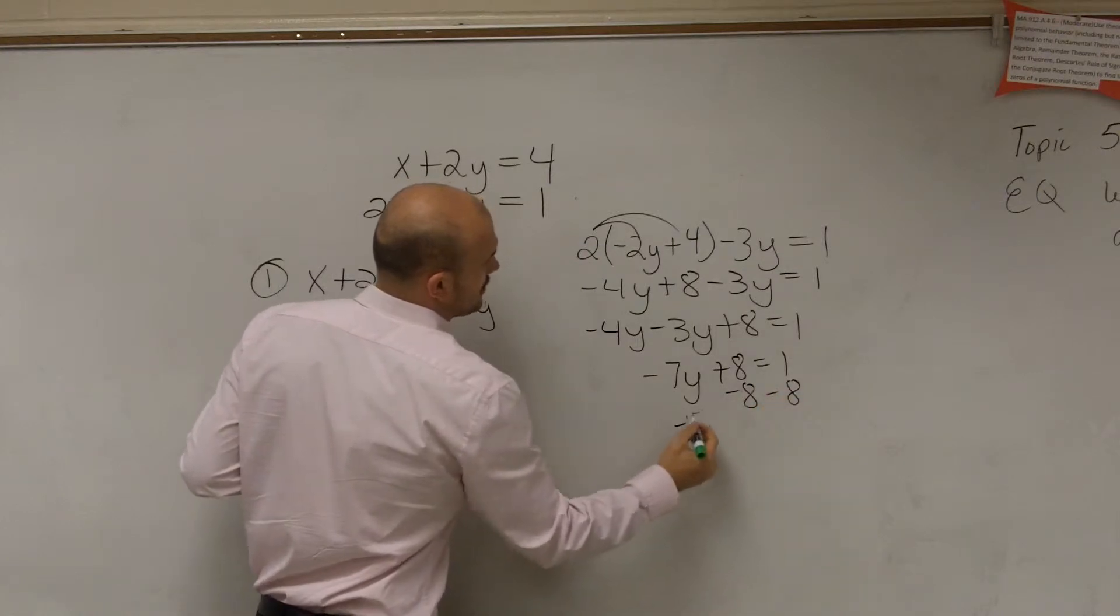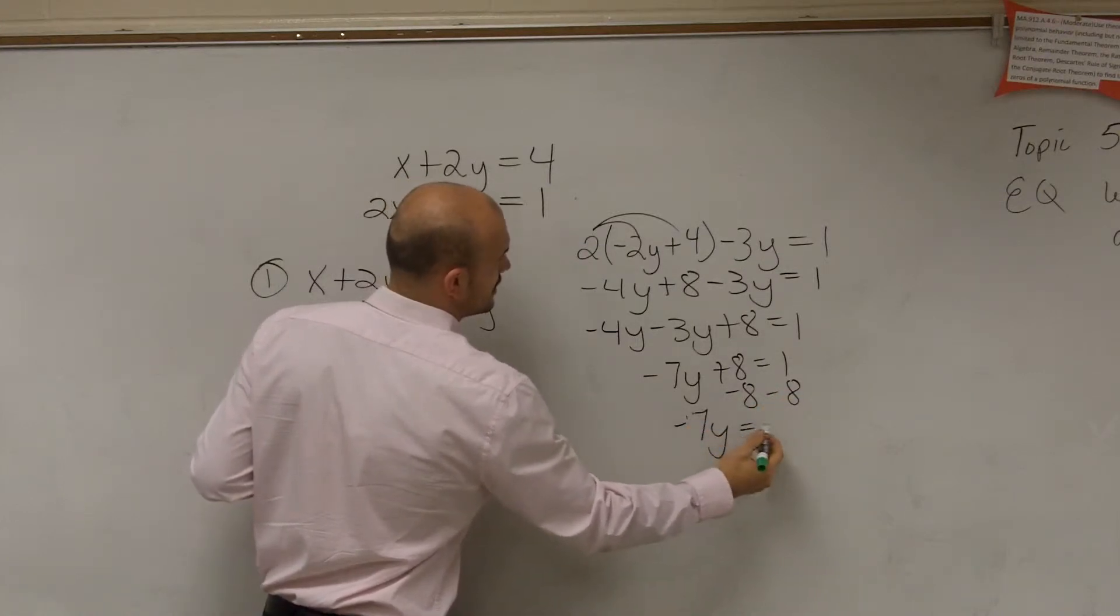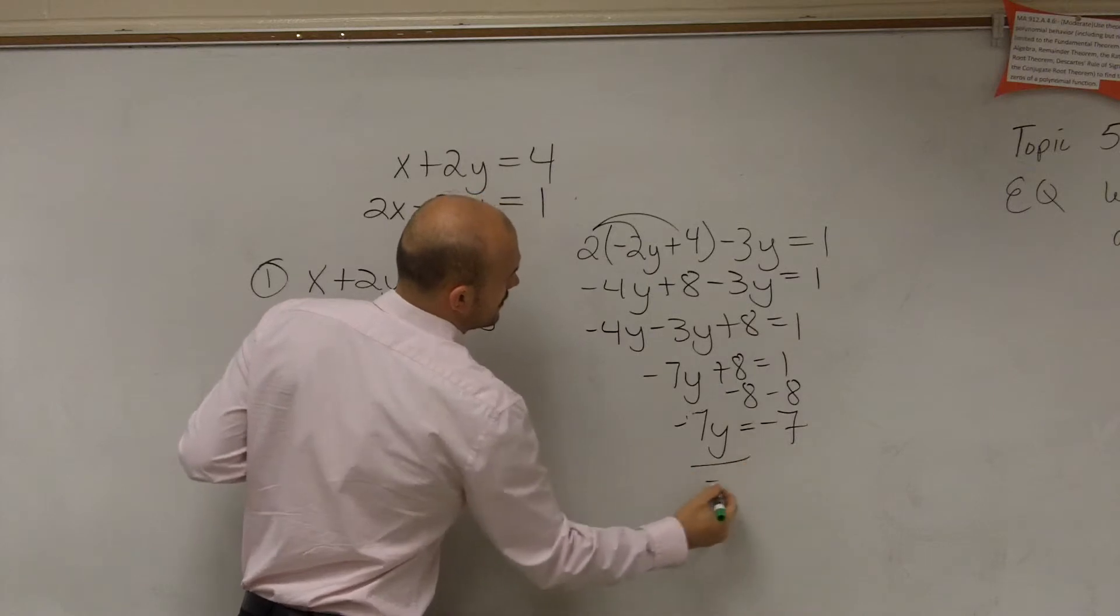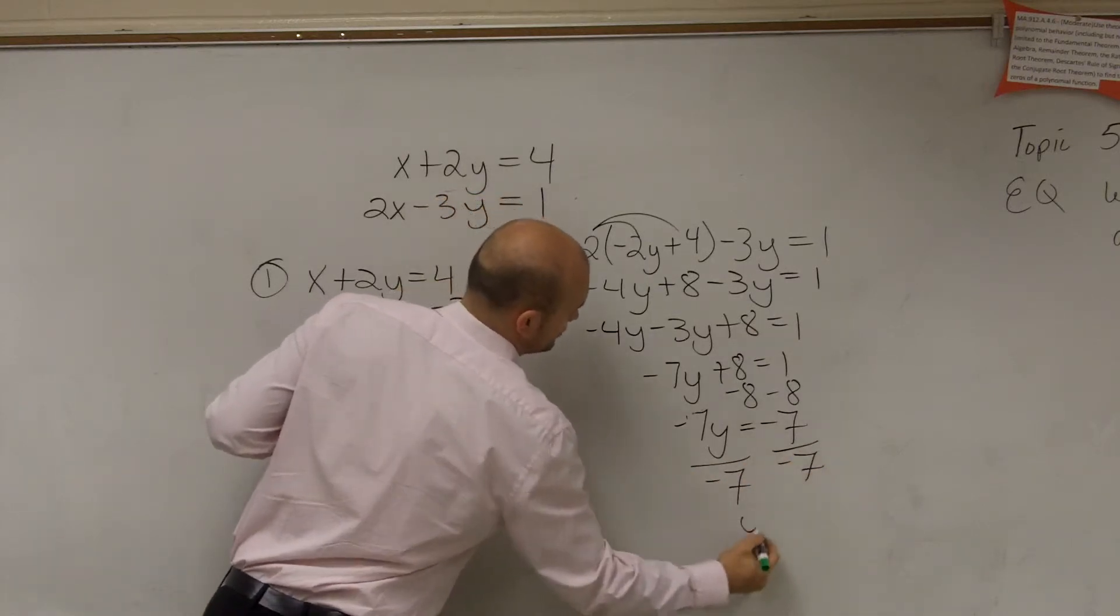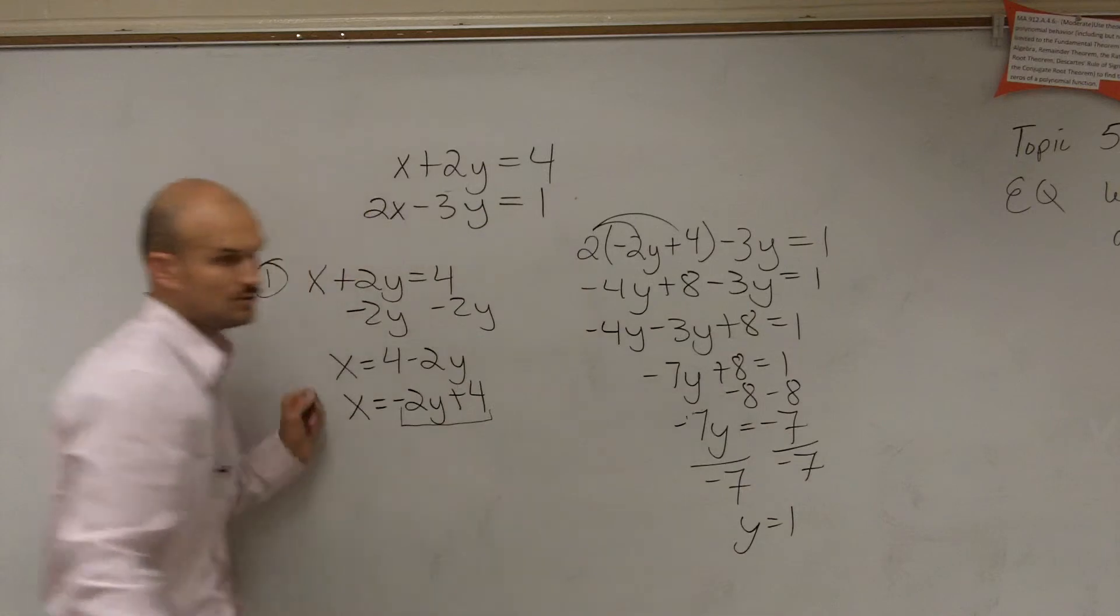Subtract 8. Negative 7y equals negative 7. Divide by negative 7 on both sides. Y equals 1.